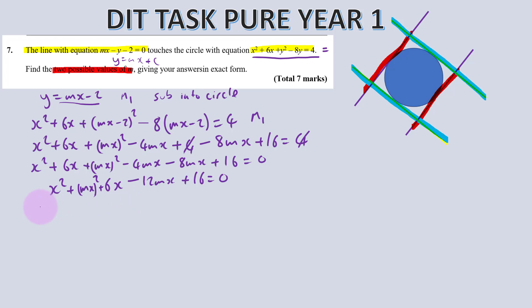Now can we simplify some of these terms? Yes, we can. That's going to go to minus 12mx plus 16 equals 0. And we're going to have a 6x. And the x squared plus this mx squared here. Now can you see that this is almost a quadratic?